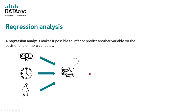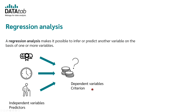The variable you want to infer — the one you want to predict — is called the dependent variable or criterion. The variables you use for prediction are called independent variables or predictors.